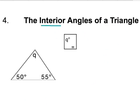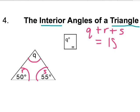Now we have interior — that means inside the shape — interior angles of a triangle. What do all three angles inside a triangle have to add up to? 180. So we have angles Q, R, and S. All three angles in a triangle always equal 180 degrees. So how would we find angle Q?